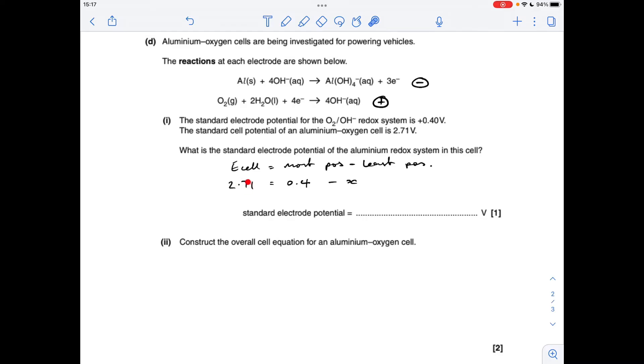The numbers in now. The cell potential is 2.71. We've established the most positive electrode is the 0.4 volts, so we'll just need to solve for this unknown here. That means the standard electrode potential of the aluminum redox system is minus 2.31 volts.